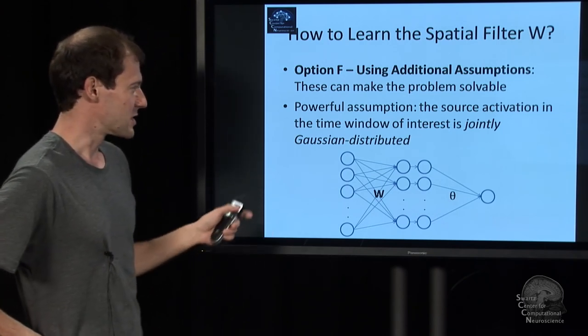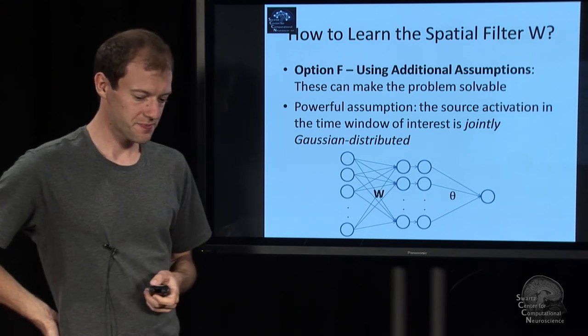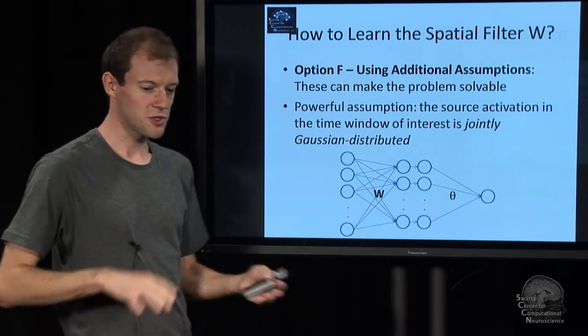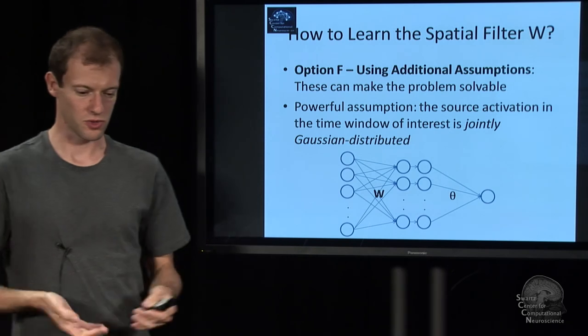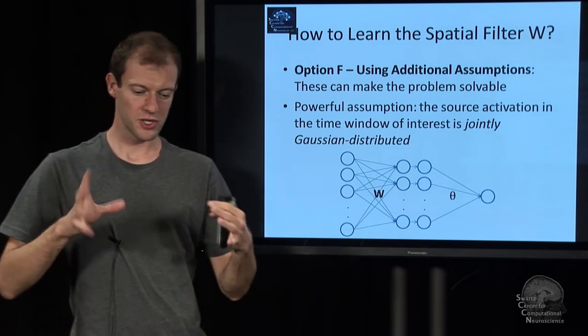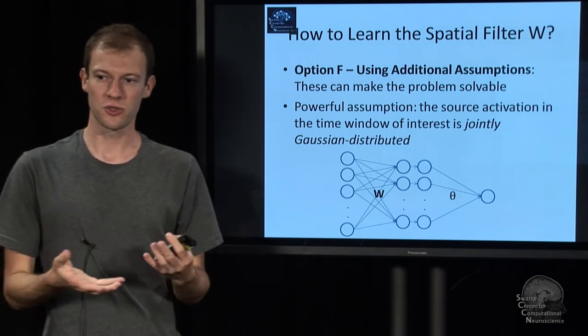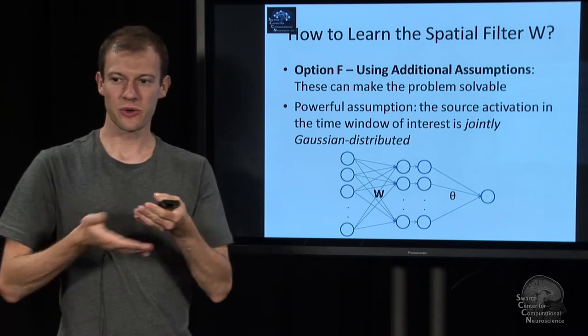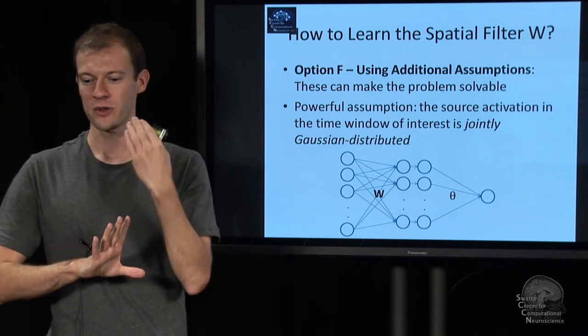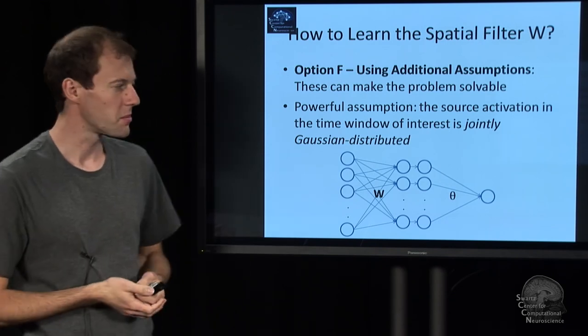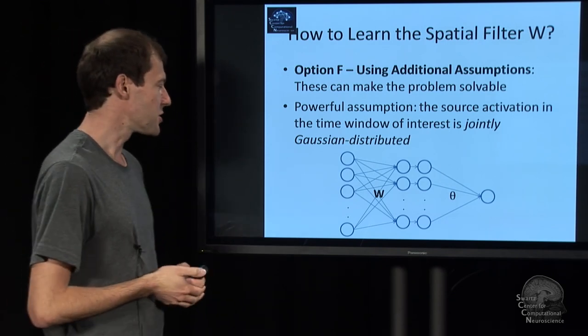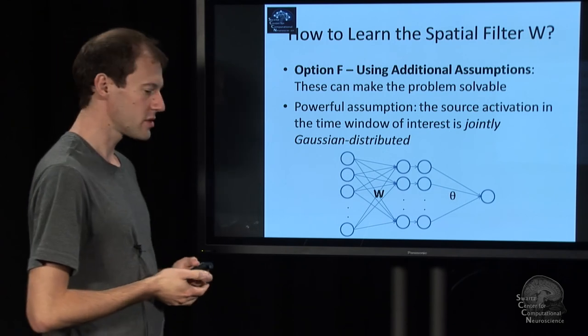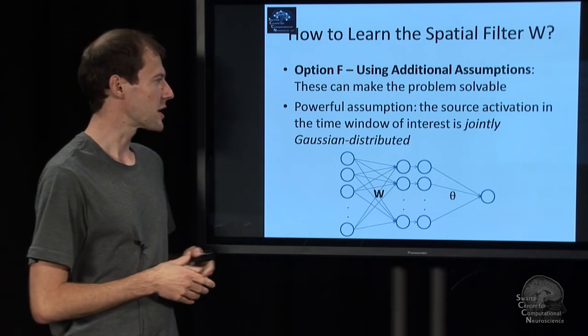And the assumption that people make is the time series that we have, X, is jointly Gaussian distributed. So source activations are Gaussian, and after you've mapped them on the channels, it's basically even more Gaussian because you've mixed things up. So under that assumption, it turns out it can become tractable.